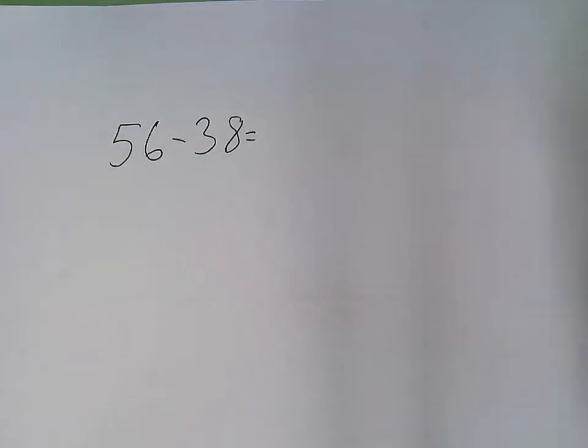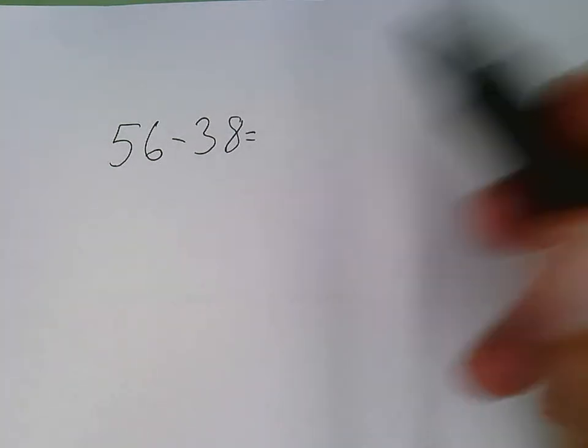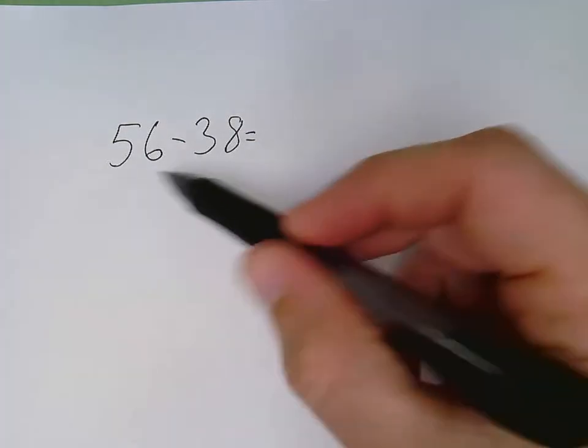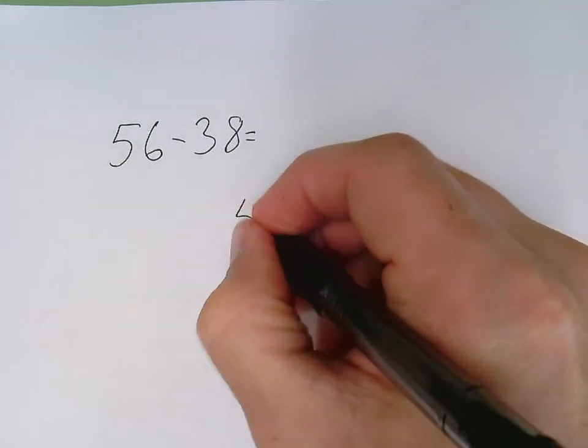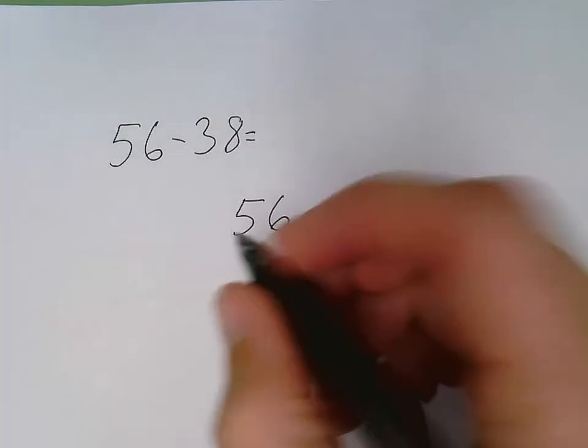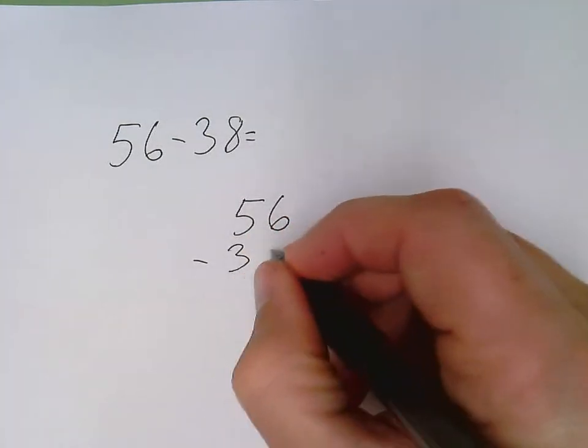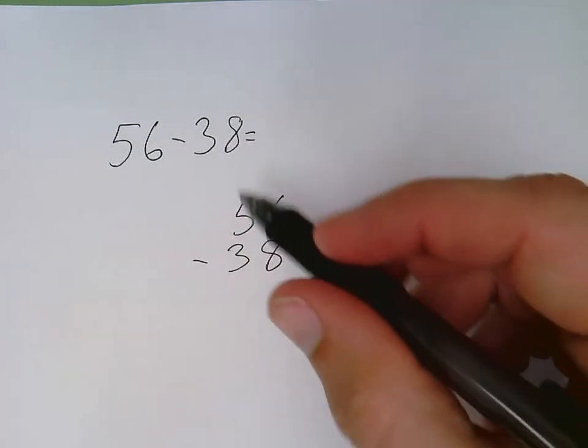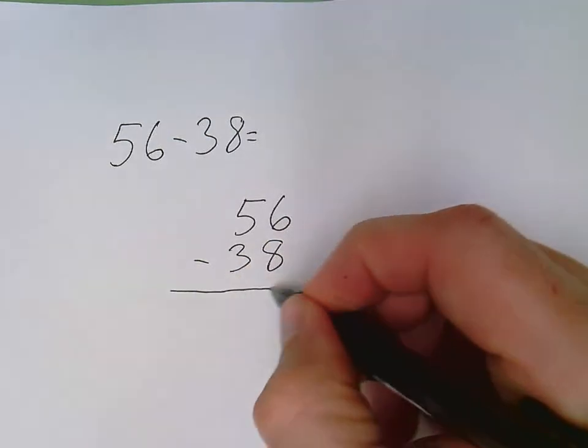The first thing I'm going to do to solve this subtraction problem is change the numbers from horizontal to vertical. So I put down my 56 and right underneath that I write down the 38, making sure my place values are nice and neat and lined up.